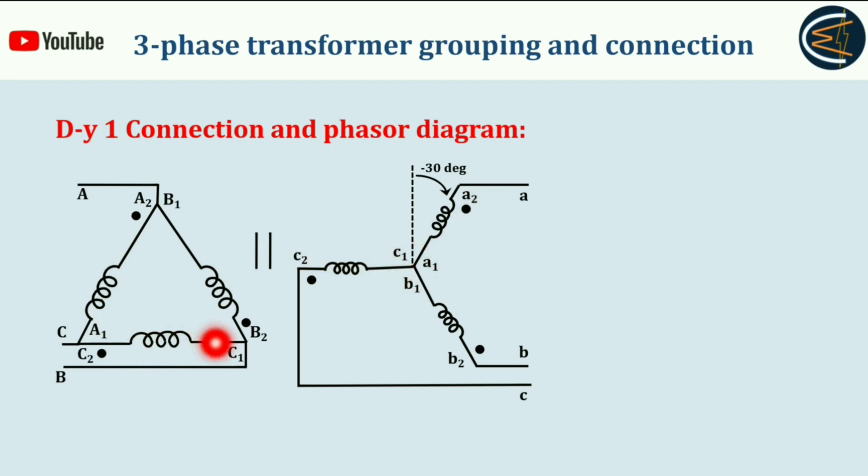and A phase parallel, C phase and C phase parallel, B phase and B phase parallel. Now let's see the phasor diagram. This is the phasor diagram for the primary side. Primary is delta connected, that means both line and